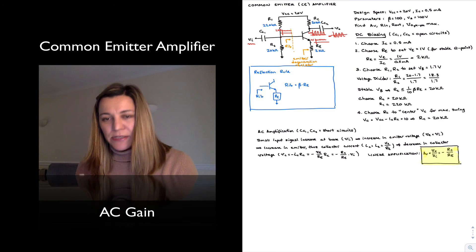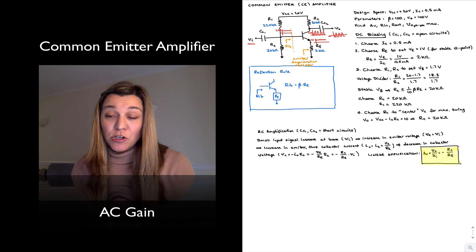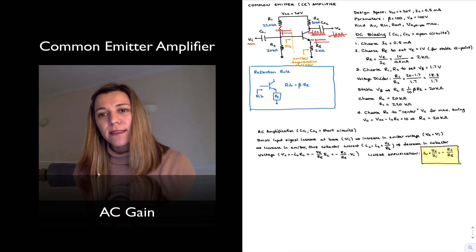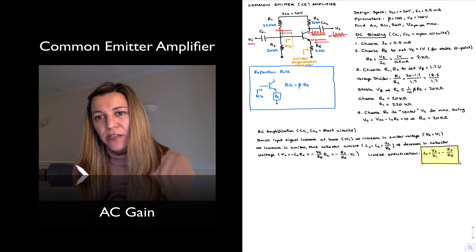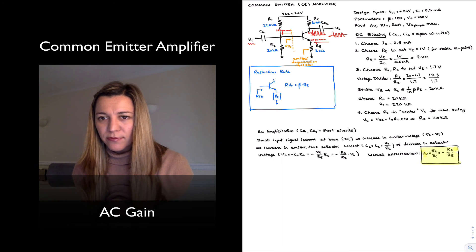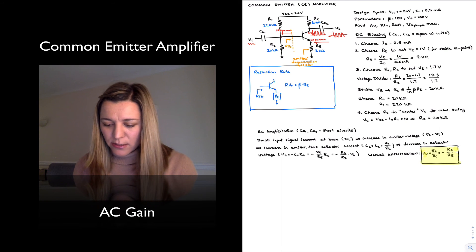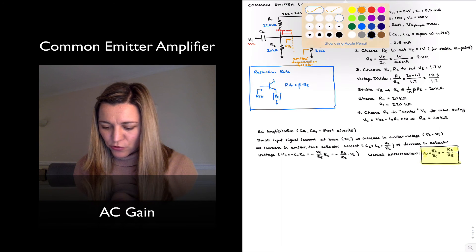One thing to notice is that we've made a slight approximation when we've calculated this gain, and that is we have ignored the dynamic resistance of the base-to-emitter resistor, what we used to call little re. Little re will be connected here. I'm going to draw it right there.